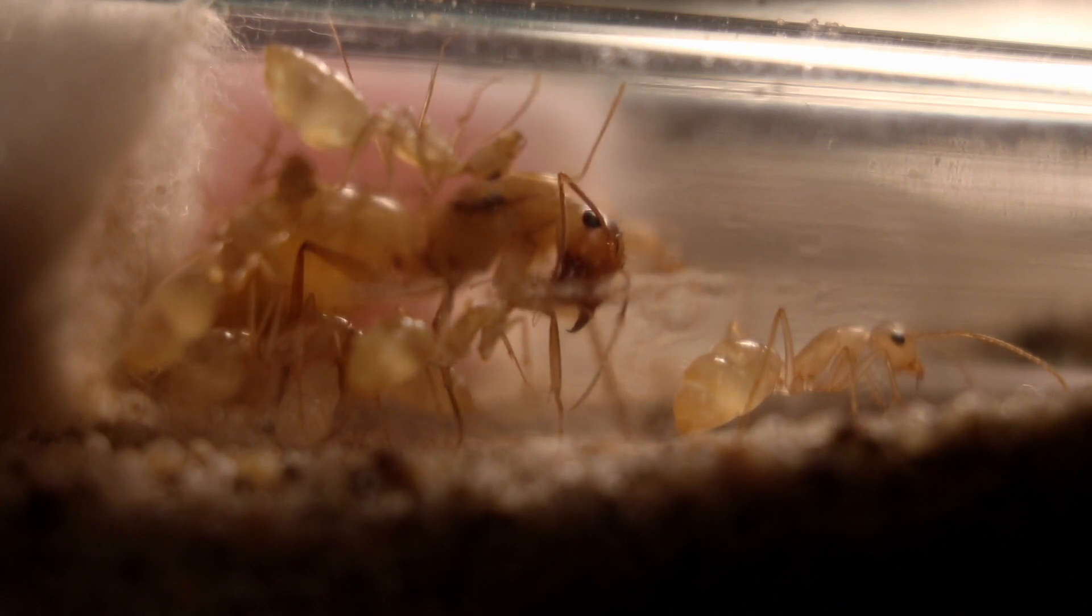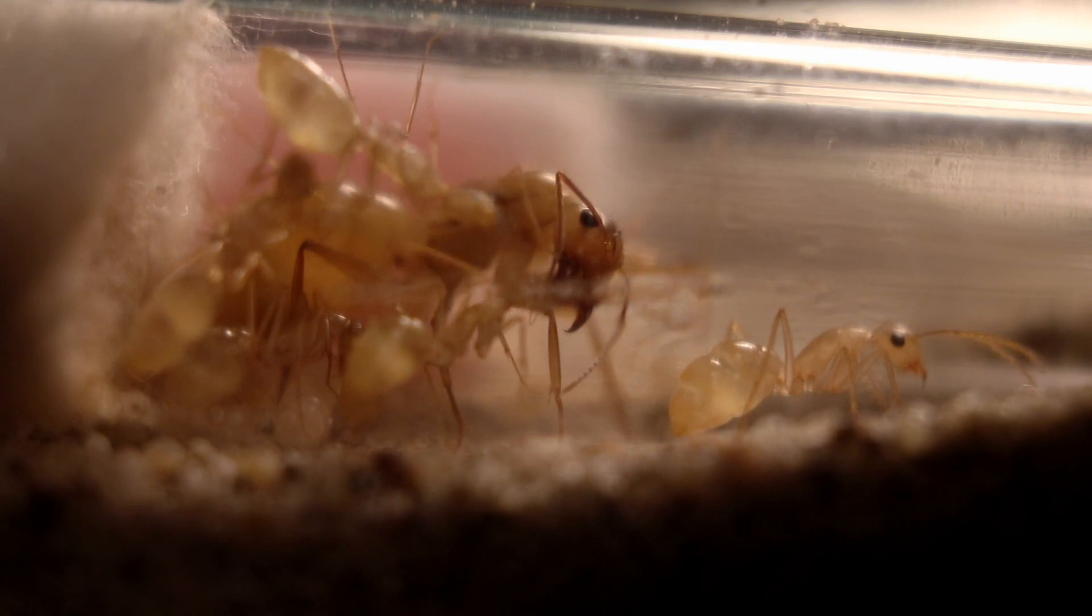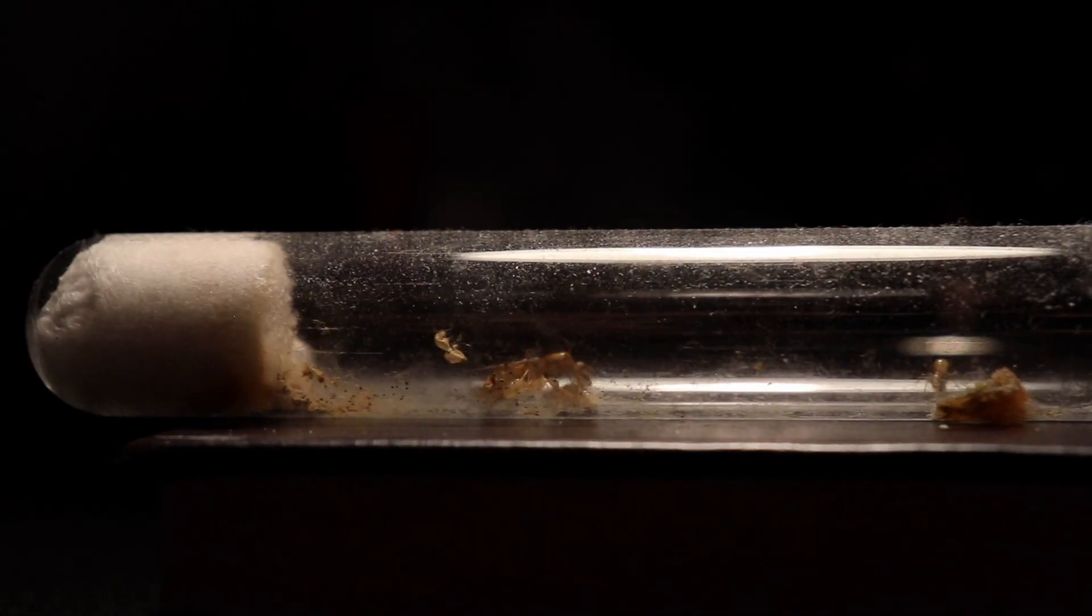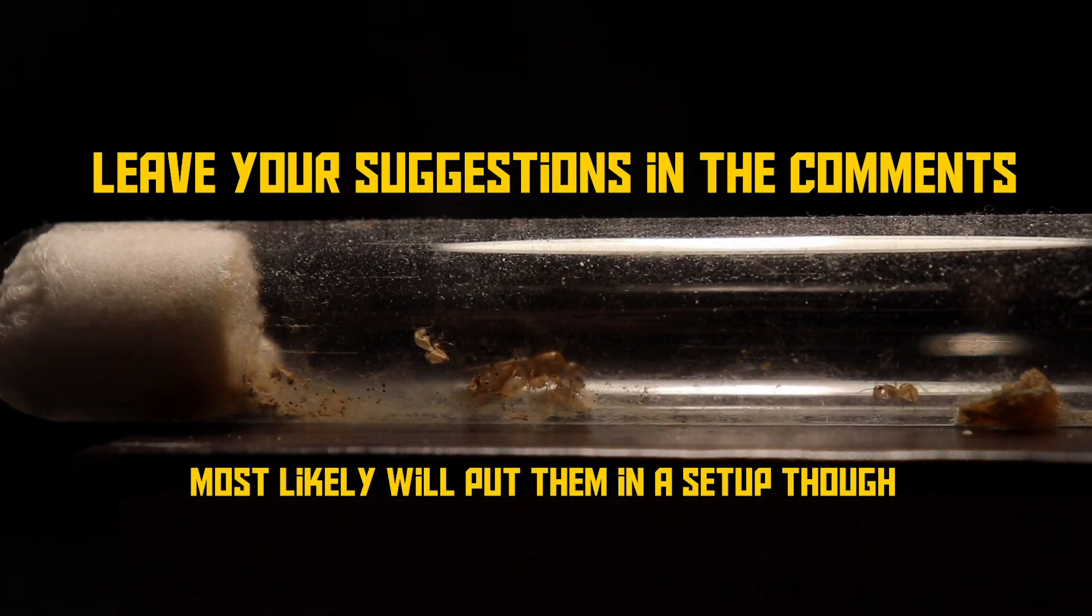My other Camponotus colony of this species needs a new test tube, but they're not willing to move. I feel like I'll put them into a cubes and tubes setup too. What do you guys think I should do? Leave your suggestions and thoughts in the comments.